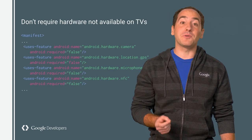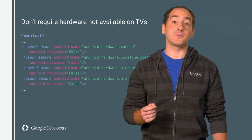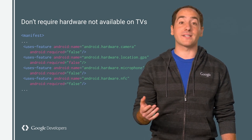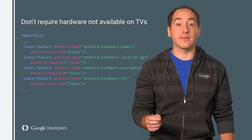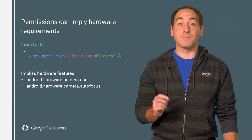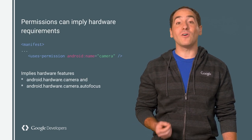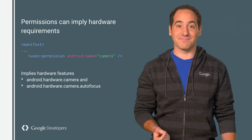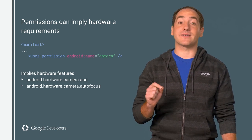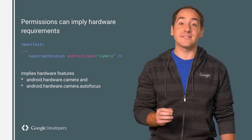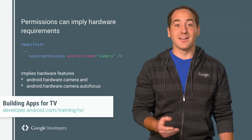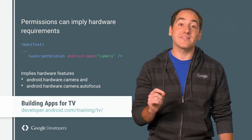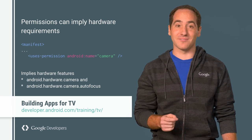Next, check through your manifest for other hardware features you use on mobile, like a camera or an accelerometer. Be sure to also mark these as not required. Keep in mind that some permissions can also imply hardware requirements. For example, using the camera permission creates an implicit dependency on camera hardware. To handle this, you'll need to explicitly mark that hardware as not required.